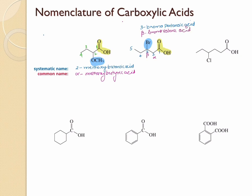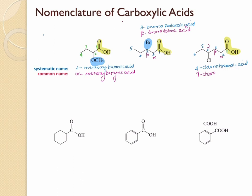The next compound again has a carboxylic acid as the functional group. Numbering: one, two, three, four, five, six — six carbons, therefore hexanoic acid. A chlorine is present at the fourth position, so the IUPAC name is 4-chlorohexanoic acid. For the common name: position two is alpha, three is beta, and four is gamma, so it's gamma-chloro. With six carbons it's caproic acid — giving gamma-chlorocaproic acid.